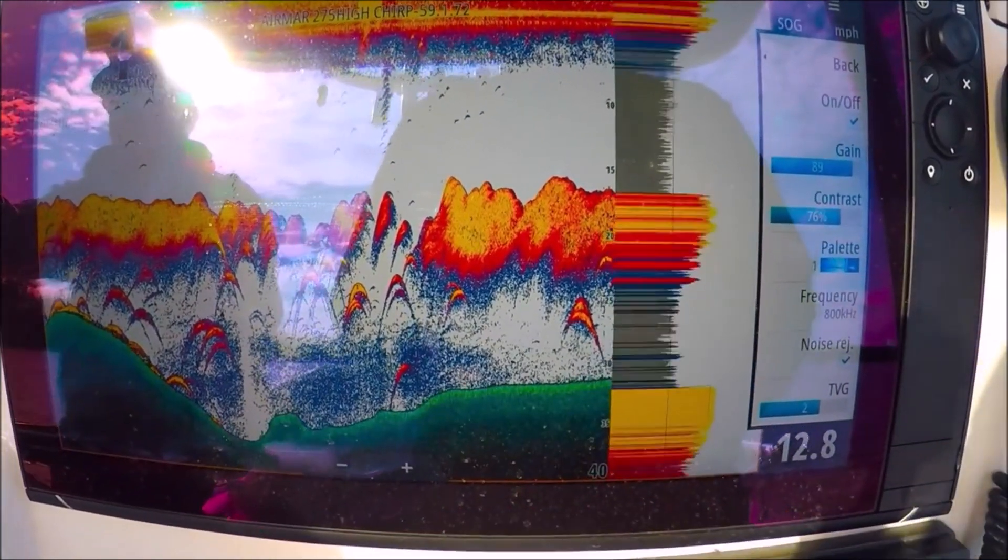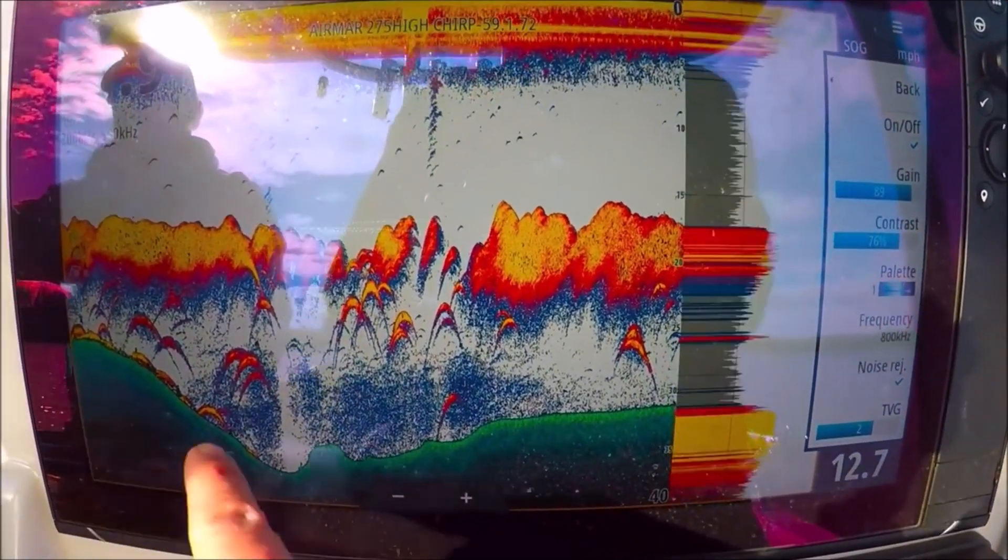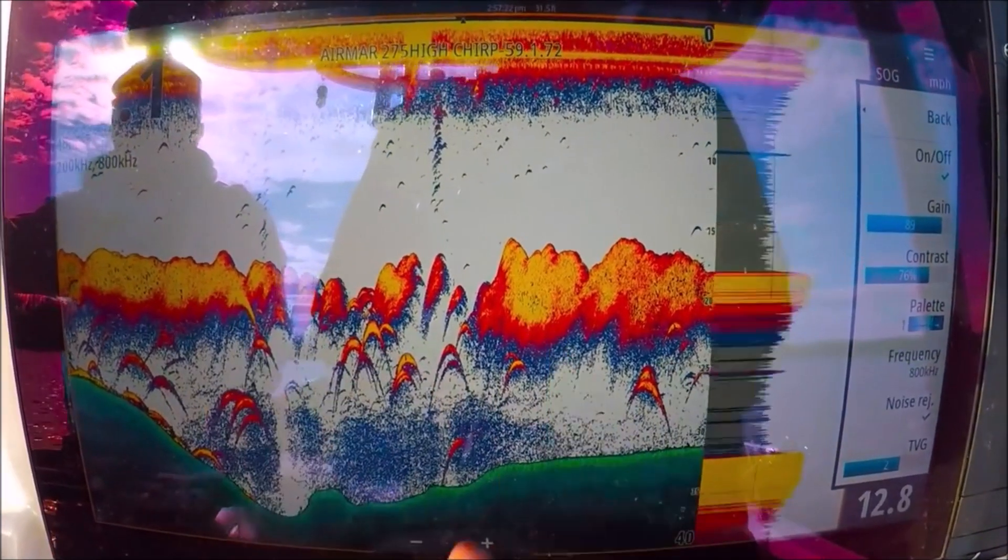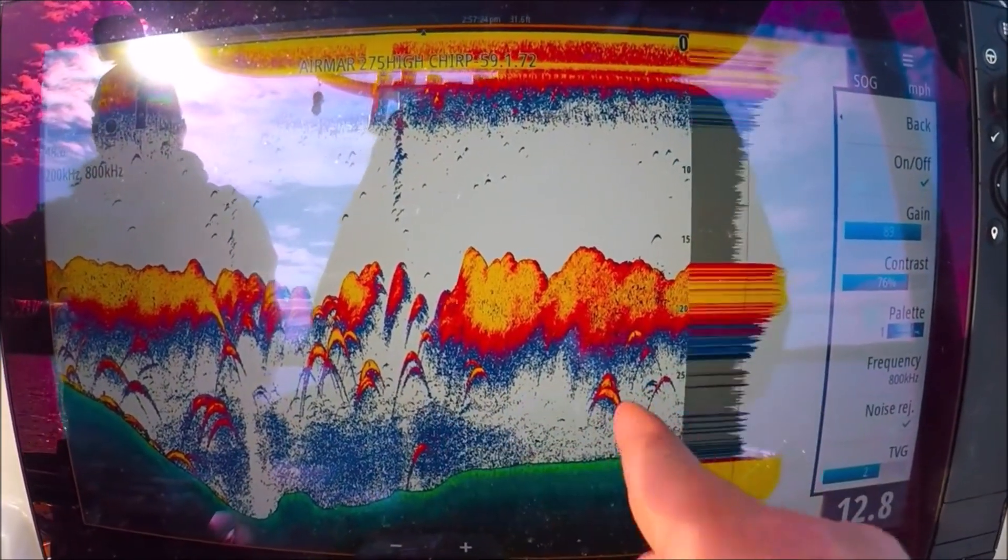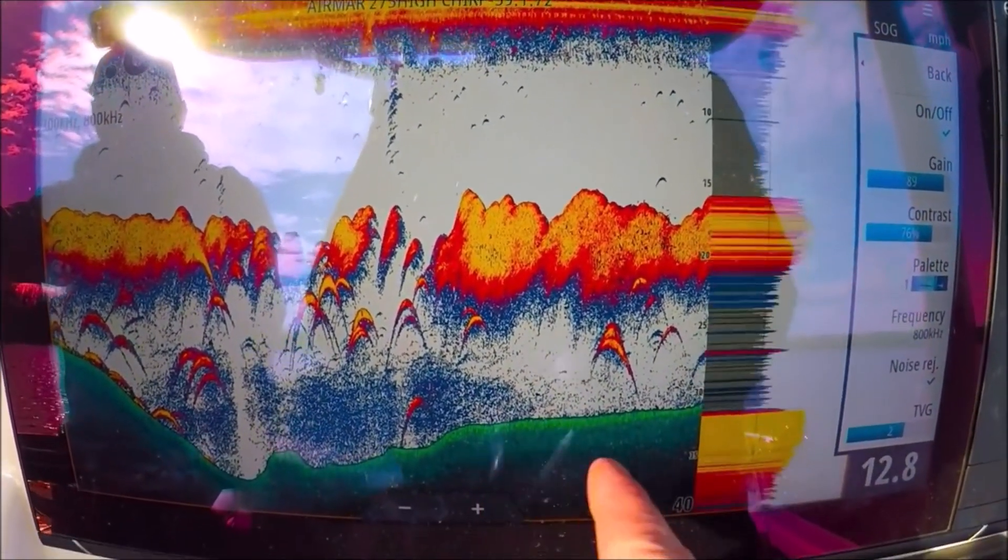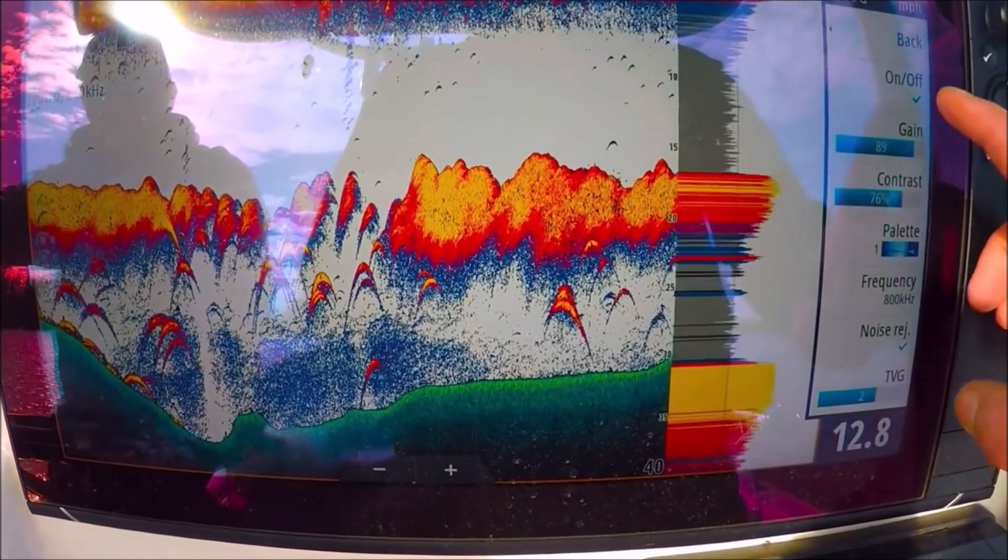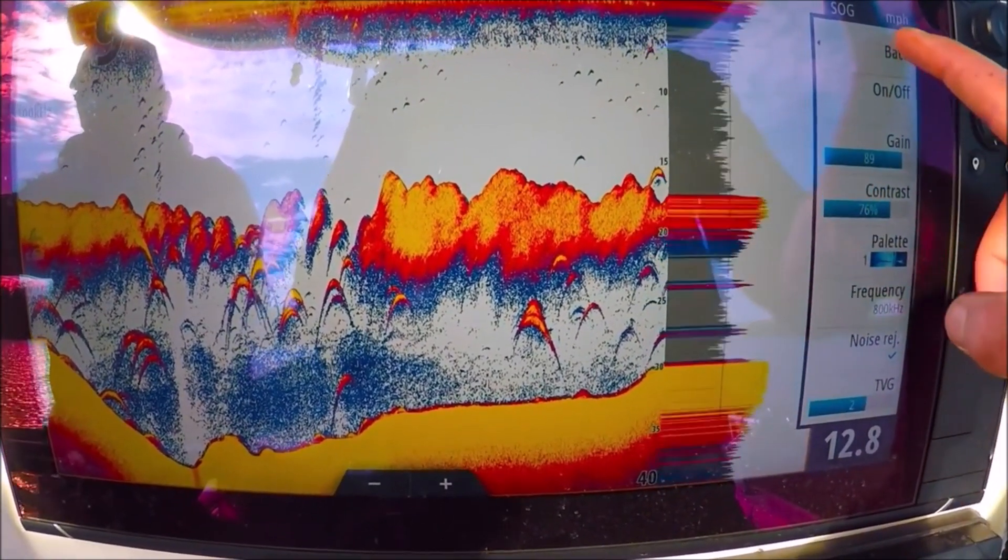There's our down scan on the bottom with our fish returns, bait fish, good hard returns with our down scan on the bottom. Let's go back.